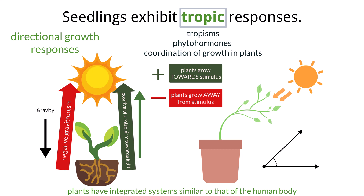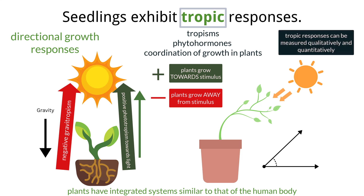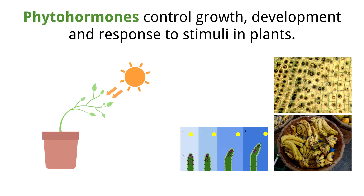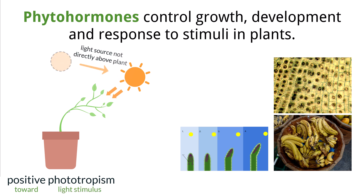Tropic responses in seedlings can be measured both qualitatively and quantitatively. A diagram could be used to record observations of seedlings and their response to a stimulus such as light. Quantitative data could also be recorded, such as measuring the angle of curvature of seedlings in response to a lateral light source. Seedlings demonstrate positive phototropism — positive indicates a plant grows toward the stimulus, and photo in phototropism refers to light. When seedlings are exposed to lateral light, shoots bend toward the light, maximizing photosynthesis.